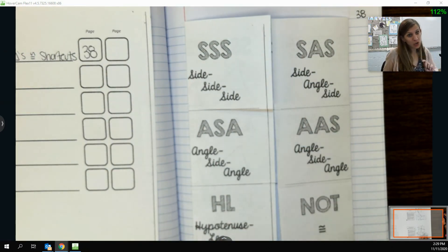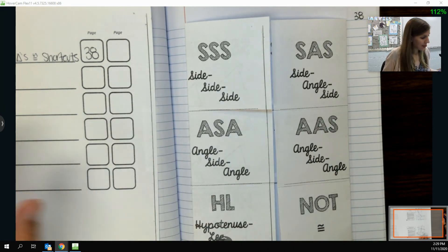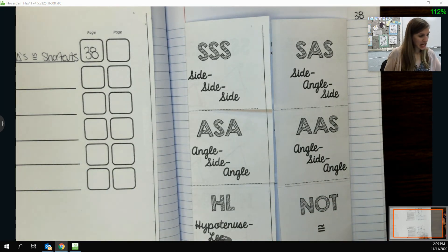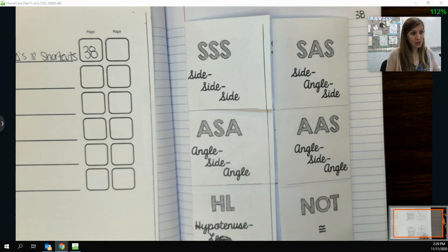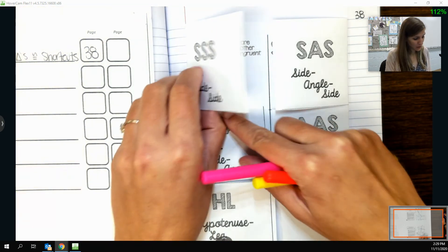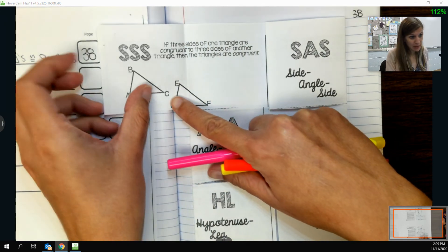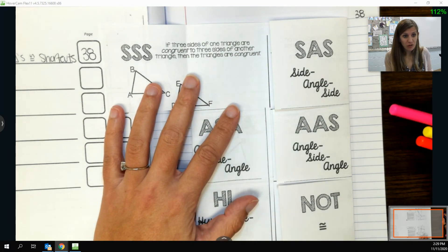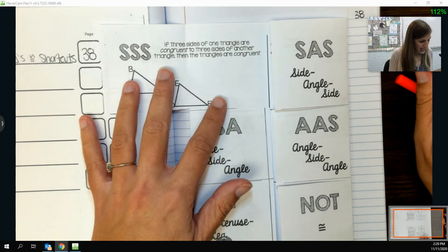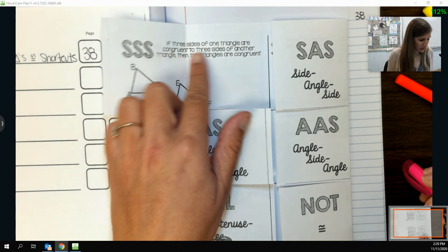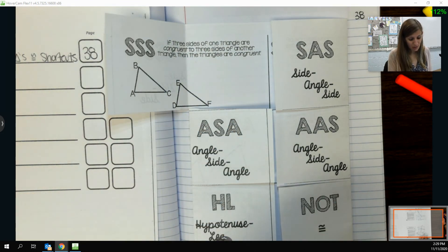One of the shortcuts that we found was that if I knew the three sides of one triangle were congruent to three sides of another, then I had enough information to know for sure that the triangles will always be congruent. So that is our first triangle congruence theorem. If three sides of one triangle are congruent to three sides of another triangle, then the triangles are congruent.